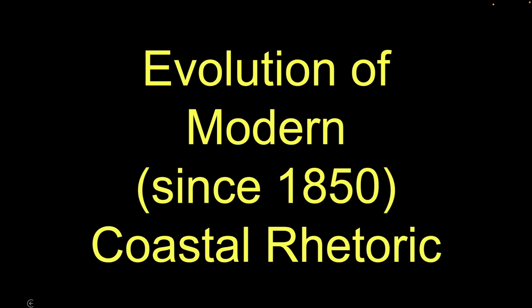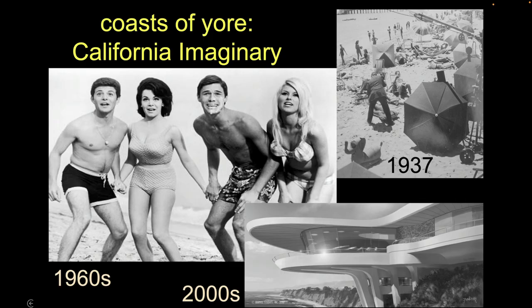What I want to talk about next is how the rhetoric about coast and coastal marine issues has changed over modern times — so from about 1850 onward. We start with what we will call, for the purpose of our class, the coastal imaginary. This is supposedly memories of the way things used to be, but it's really more aspirational — kind of invented. It's like those last few paintings we looked at that are magical, dreamlike, and idealized.